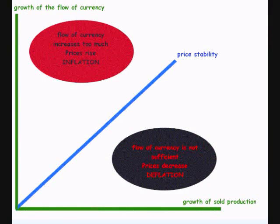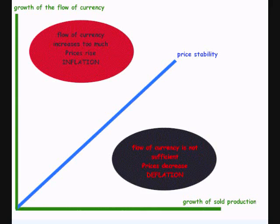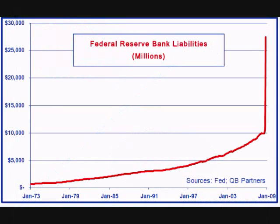In my last video, I showed how changing the reserve requirements raises or lowers the money supply. If the Fed raises reserve levels, it leaves less money over for the banks to loan out. Since banks have less money to loan out, it reduces the amount of currency in circulation. If the Fed lowers reserve rates, it leaves more money left over for banks to loan out, which increases the amount of currency in circulation.